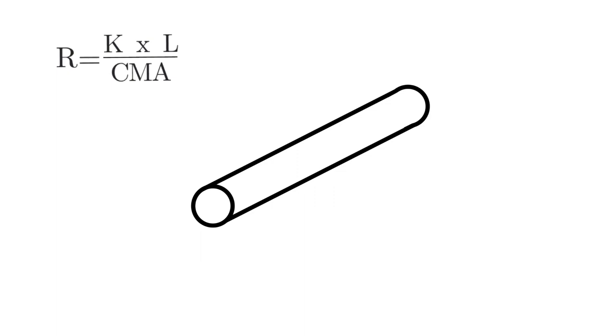But you can also have brass, cadmium, copper weld, iron, nichrome, silver, steel, tungsten—there's a bunch of them out there. So that's the constant, the resistivity constant, so that's your K. Length is going to be the length of the conductor in feet, and CMA is going to be the circular mil area of the conductor.